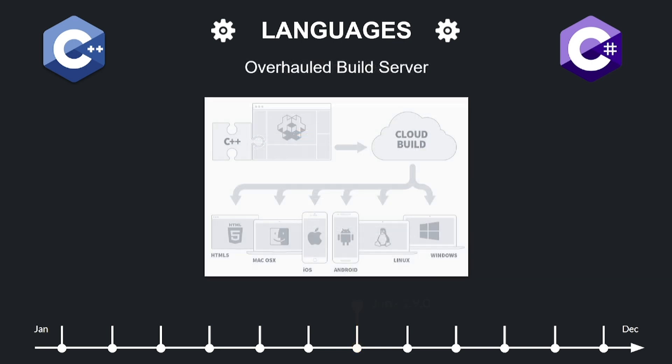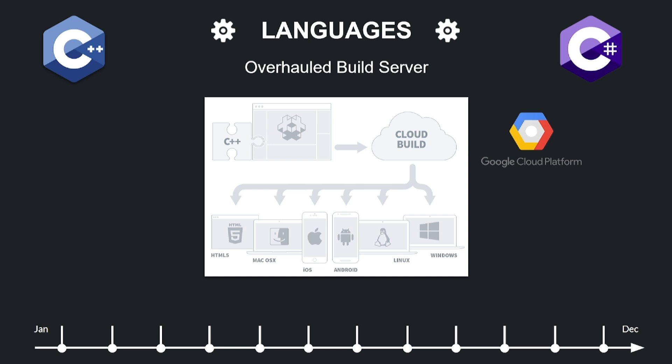Eight years ago, Default revolutionized game development with its extension system and cloud builders on AWS, enabling developers to integrate third-party services and platform-specific features without relying on the Default team or additional tools. In 2024, Default overhauled its build server infrastructure, splitting servers into platform-specific instances for better scalability and migrating from AWS to Google Cloud Platform. This move simplifies server setup, reduces costs, and allows users to easily create their own build server using public container registries.